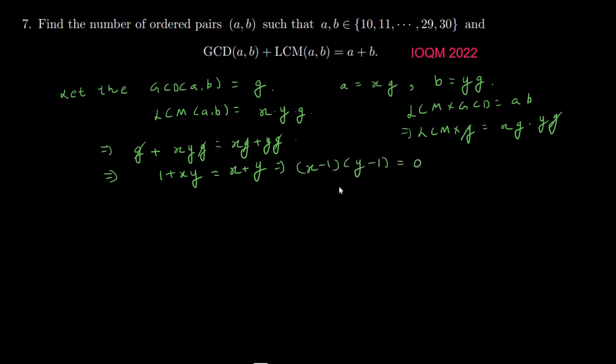So one of two things will happen: either x = 1 or y = 1. What does it mean if x = 1? Then a will directly be the GCD and b will be y·g, so we can say that b will be a multiple of a. Or if y = 1, then a is a multiple of b. So either a is a multiple of b or vice versa.